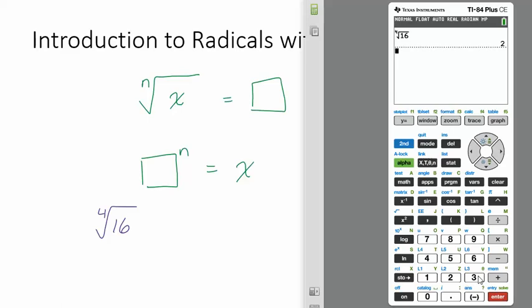Alright, so we could do the cubed root. If we want to do cubed root, we can go math, go down here and just choose option 4 or hit 4. And then we could put in negative 64 because we can do the cubed root of a negative, right?